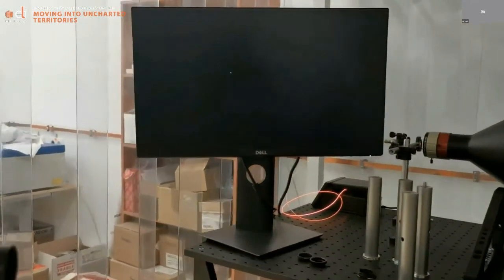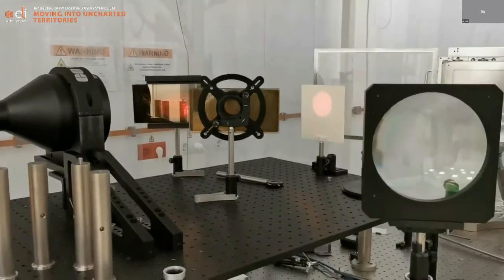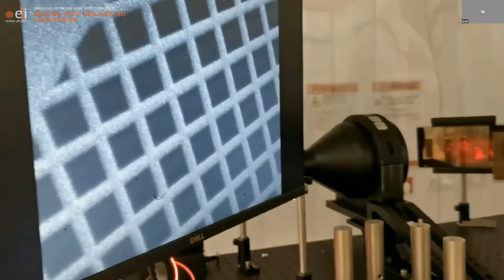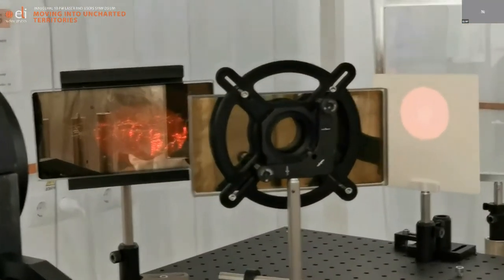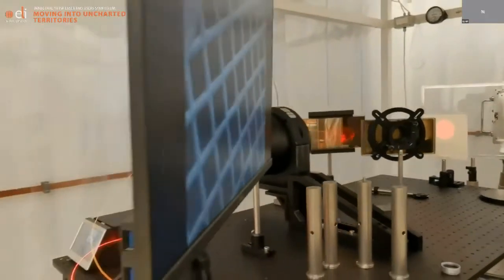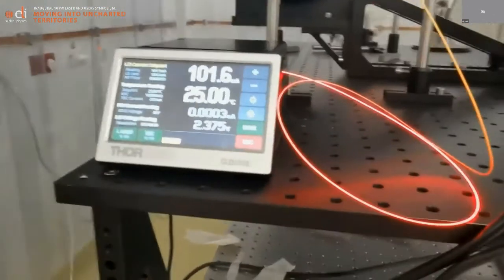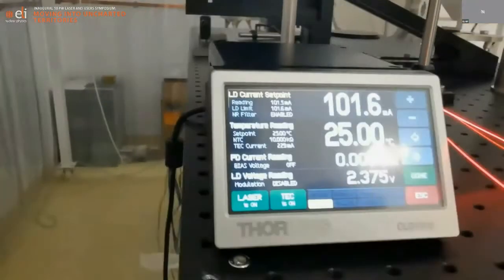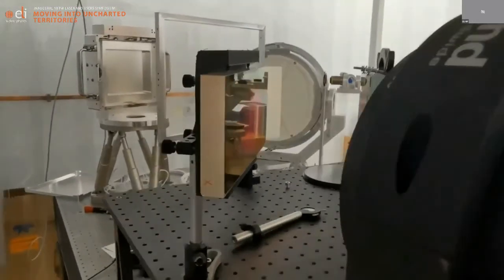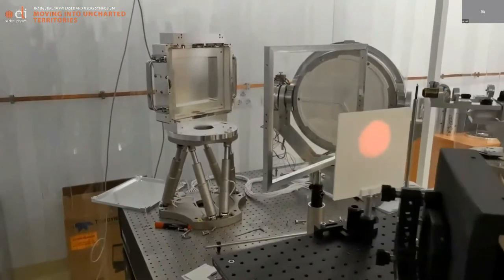All the sensitive optomechanical testing takes place in two ISO-8 cleanrooms that ensure the proper conditions for working with such systems, granting the success of the experiments that already take place in ELI-NP facility. Acting as an international user facility, ELI-NP will have external users bringing sensitive equipment for building new experimental setups that will be constructed and tested in the same laboratory.